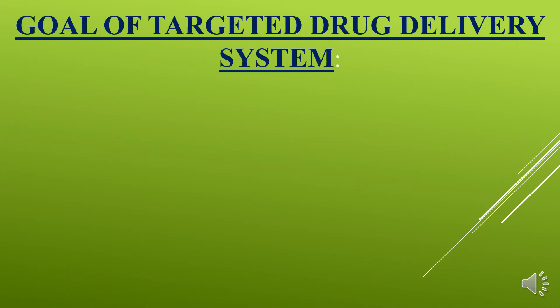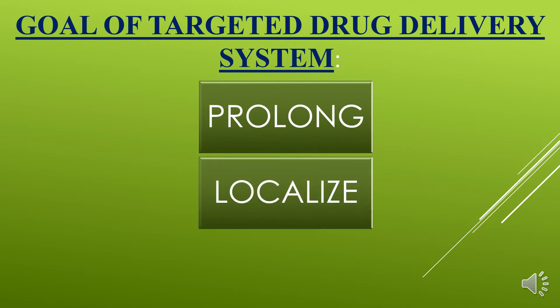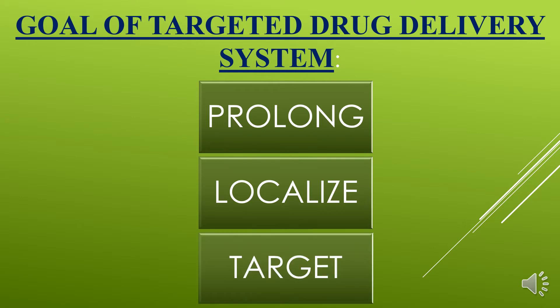Goal of Targeted Drug Delivery System. First: Prolong — targeted drug delivery system is usually a slow and steady release of drug for an extended period of time. Second: Localize — medication is given to a certain site or particular part of the body. Third: Target — a part of the body or organ as the aim of attack or a drug delivery point.